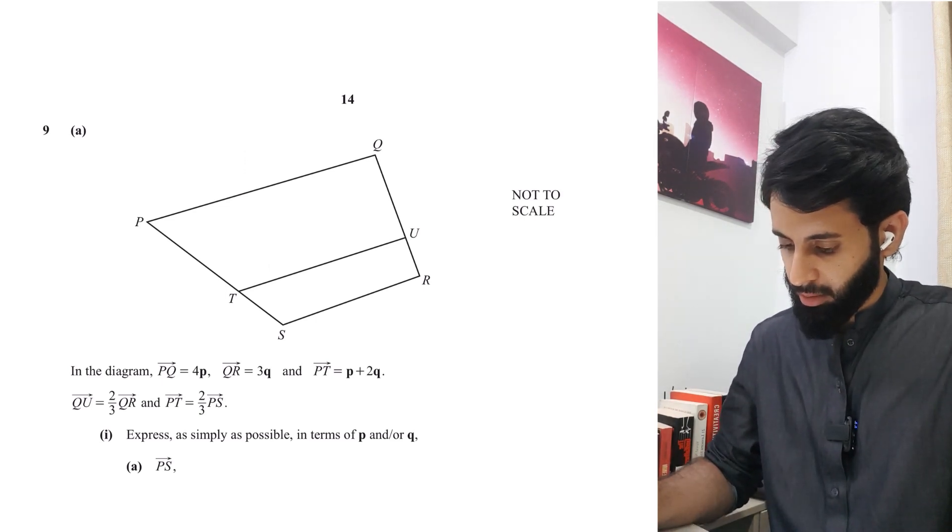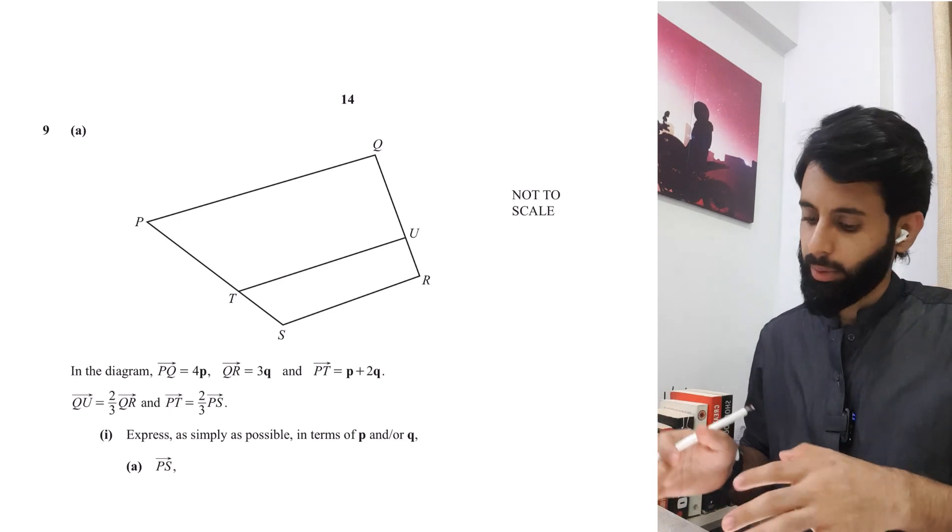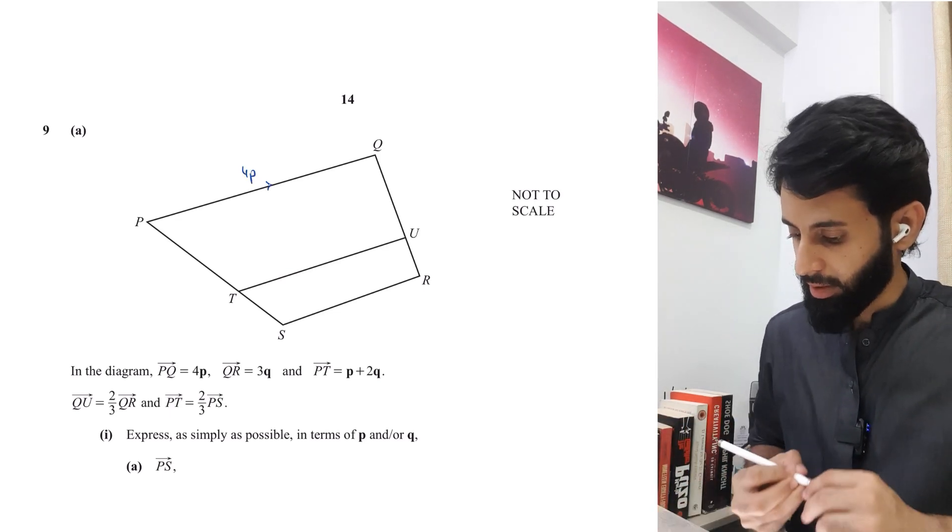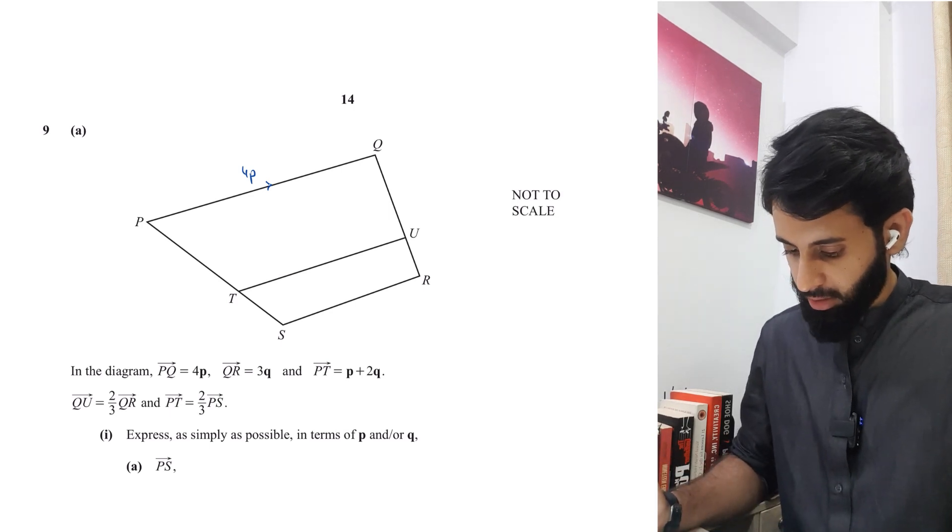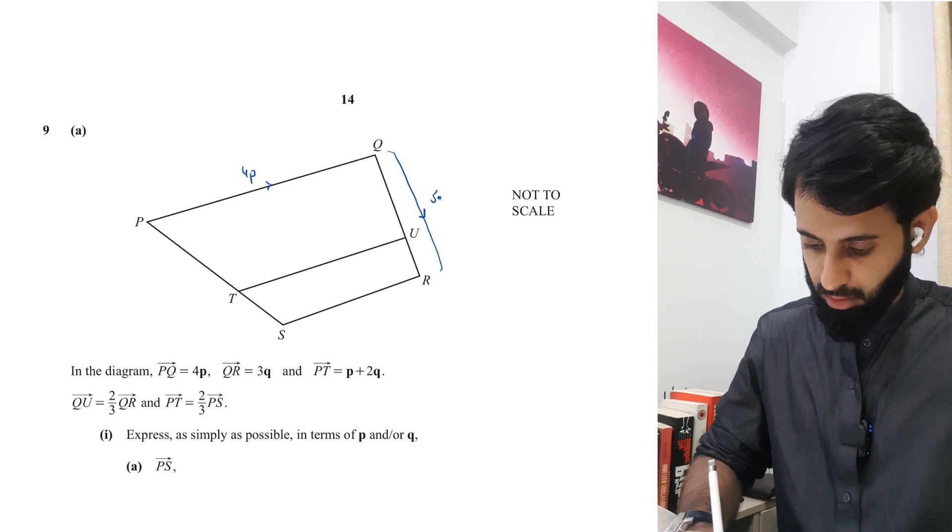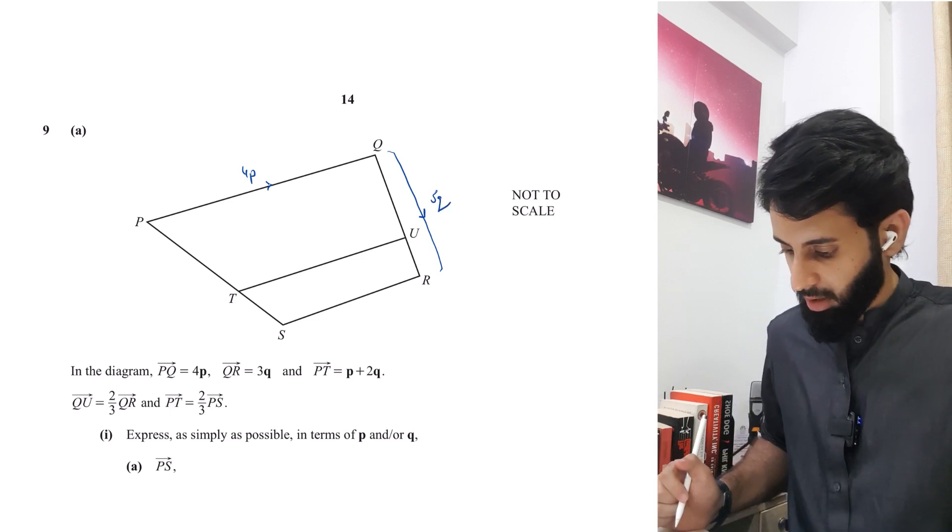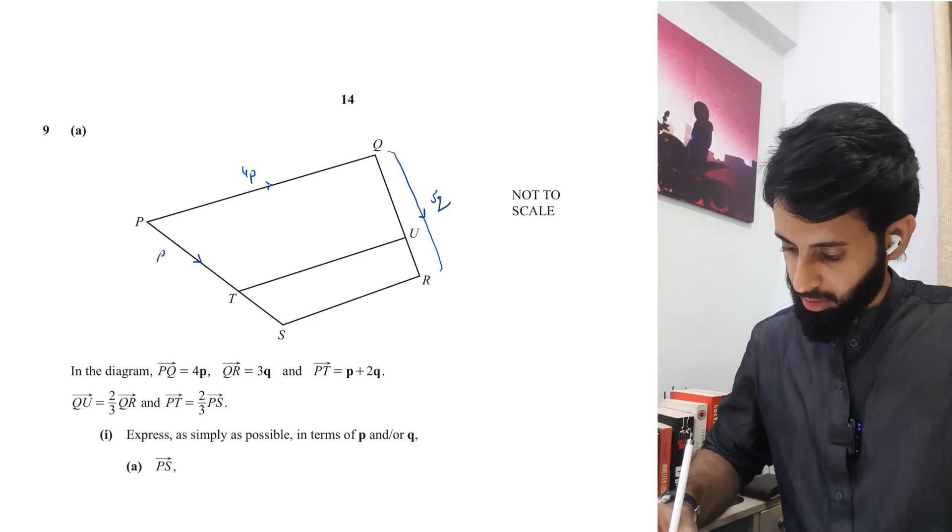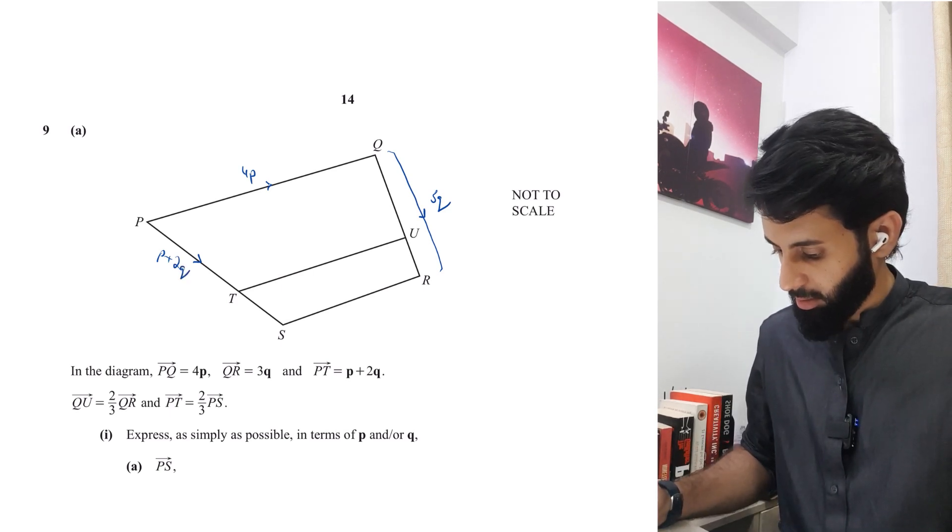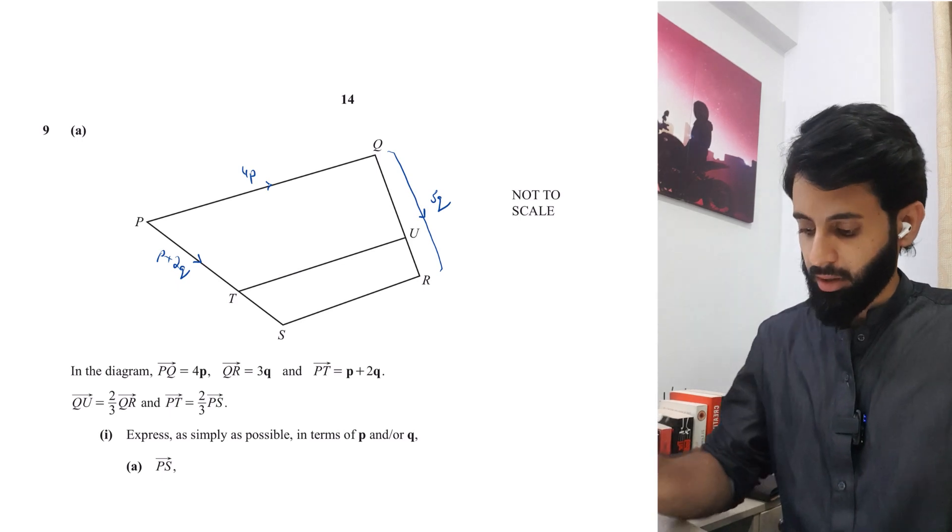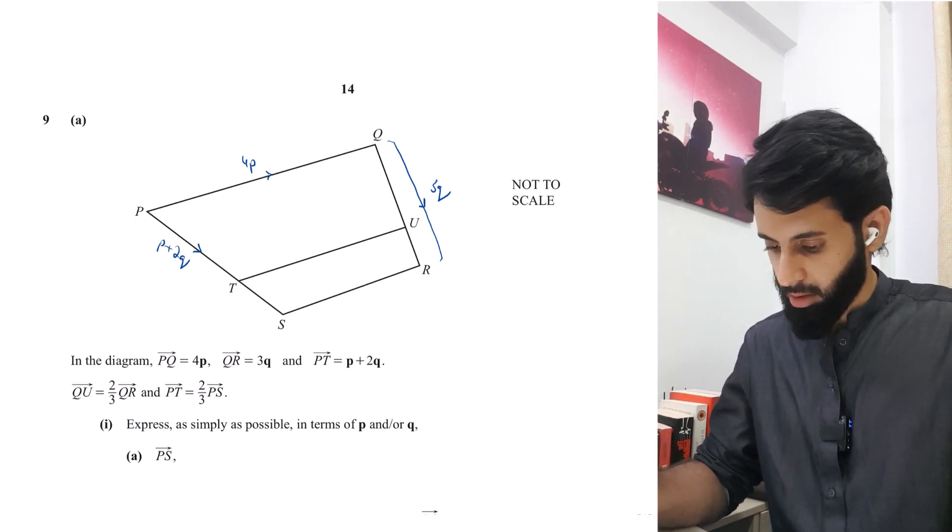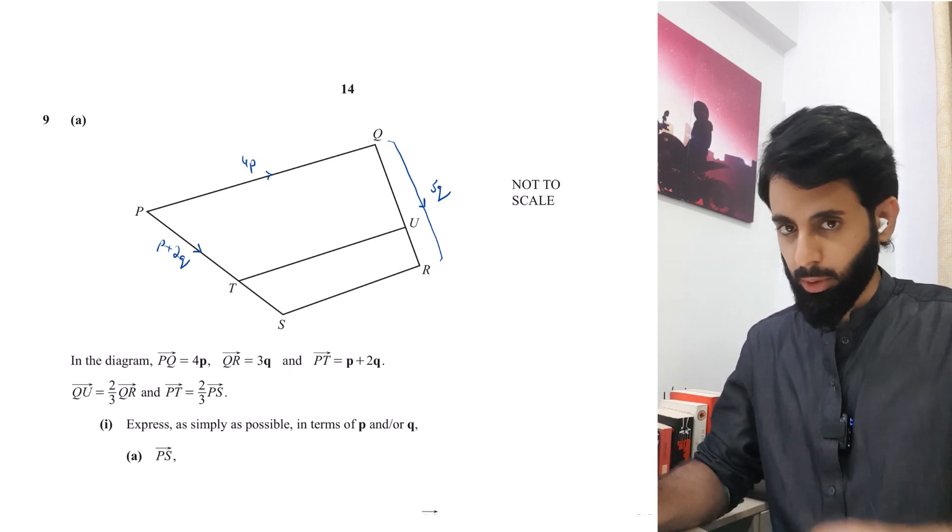In the diagram PQ is equals to 4P. So as you're reading the question, make sure that you keep looking at the diagram too. QR is equals to 3Q. PT is equals to P plus 2Q. And then the question says that QU is equals to 2 thirds of QR, and PT is equals to 2 thirds of PS. We'll use it as we go along.